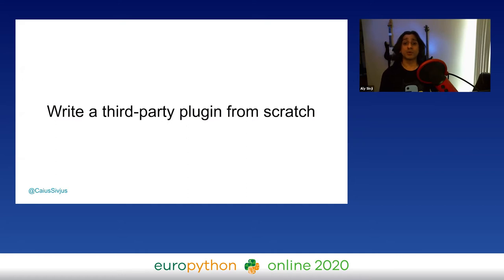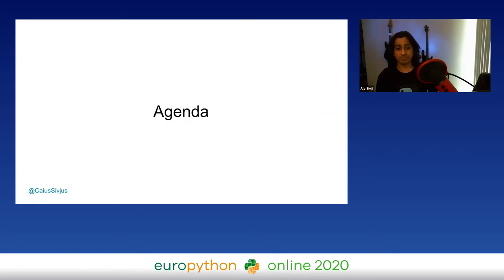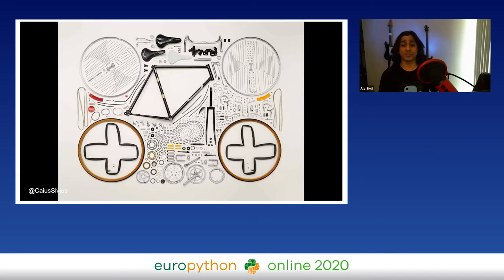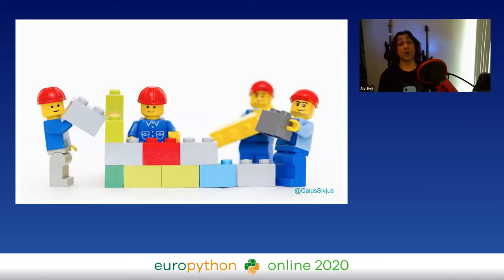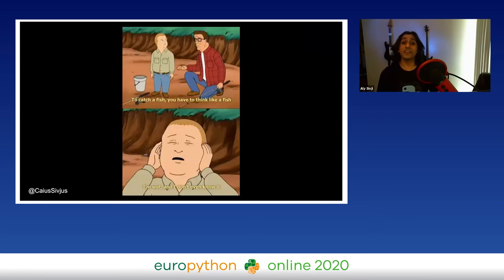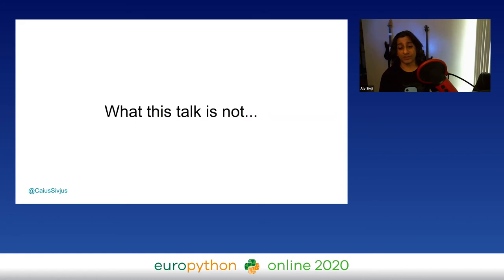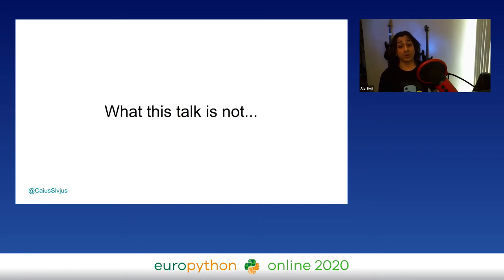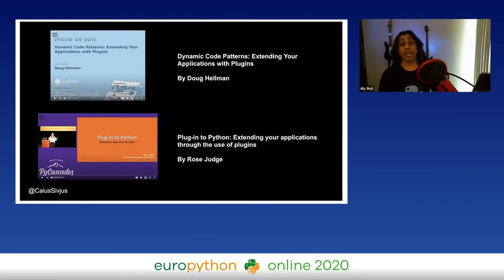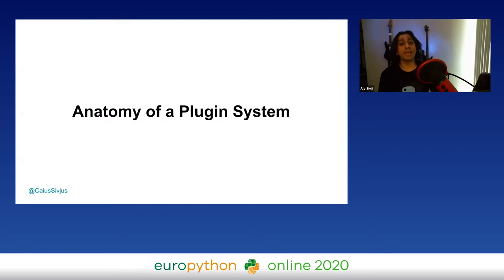By the end of this session I hope to give you enough knowledge to go out and write a third-party plugin for any application — not just Python, the concepts apply generally. We'll start by deconstructing plugin systems into their base components, then use that knowledge to build a small application with a naive plugin system. I like doing things from first principles, so the best way to learn is to build one. Finally, we'll explore how to write plugins for Flask and Django.